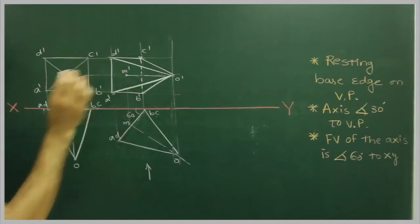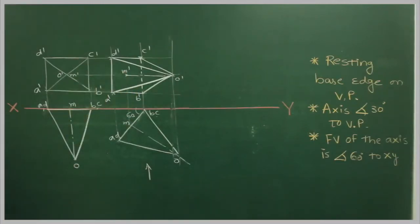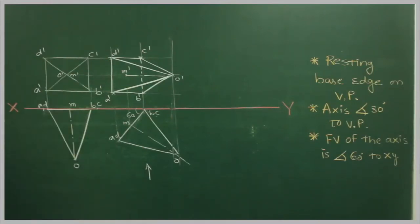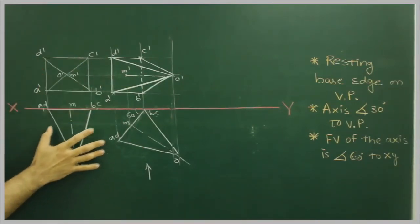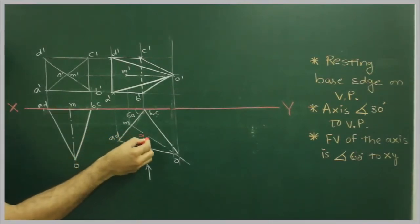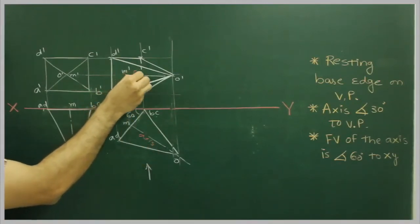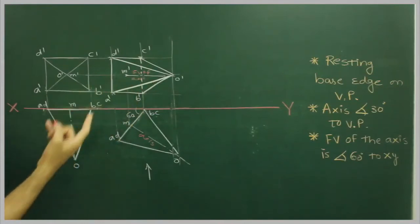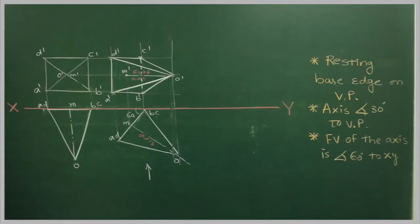So now we got stage two. First stage we got this. And the second stage we got this. Now in third stage they are asking us to draw front field axis inclined at 60 degree to x1i. So what we will do? Now if you see, this is axis. And this is front field axis. Right? So they want us to draw front field axis inclined at 60 degree to x1i. So what we will do?